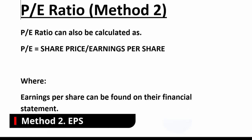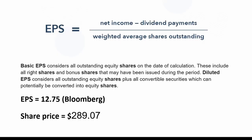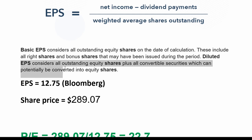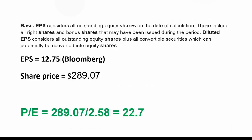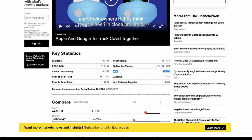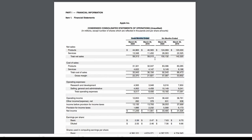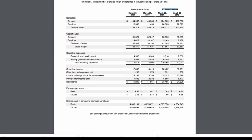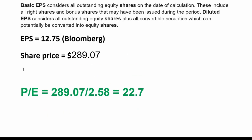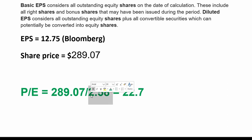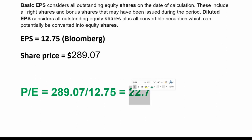Here is method two. You take the share price and divide it by the earnings per share. Earnings per share considers all outstanding equity shares plus all convertible securities which can be converted into equity shares. The earnings per share figure is 12.75 — that's the 12-month earnings per share from Bloomberg. So we take the share price of $289.07 and divide it by 12.75, which gives us 22.7 — the same result we found earlier.